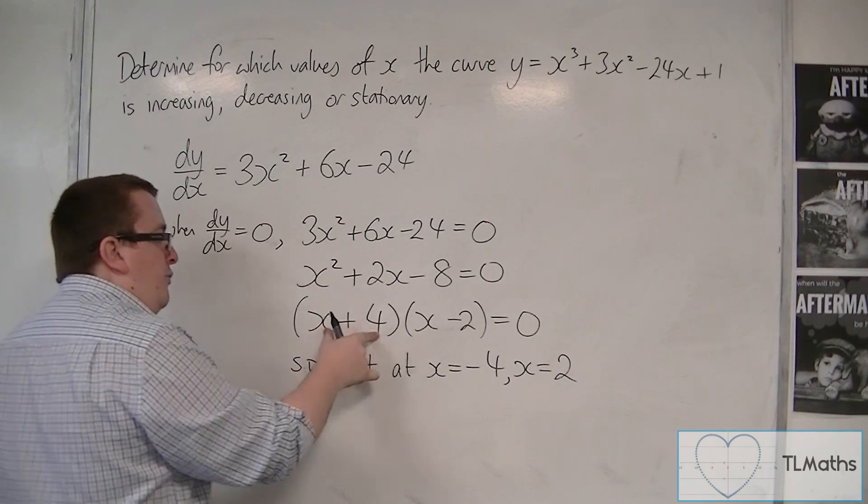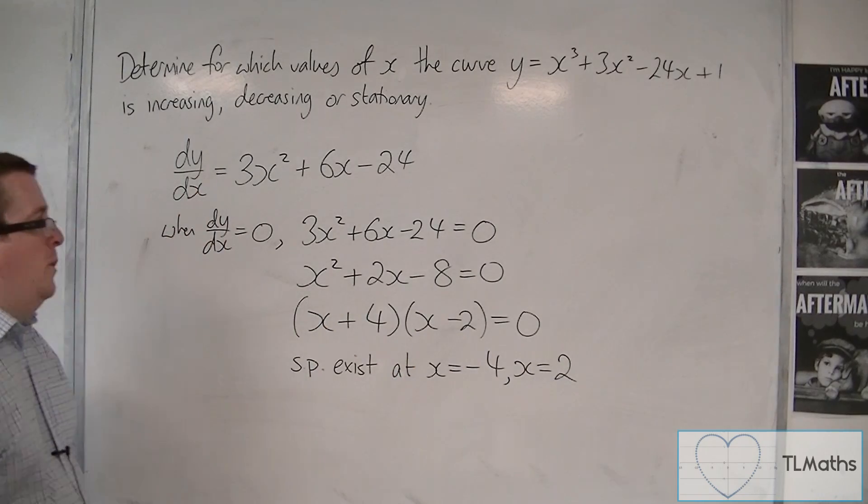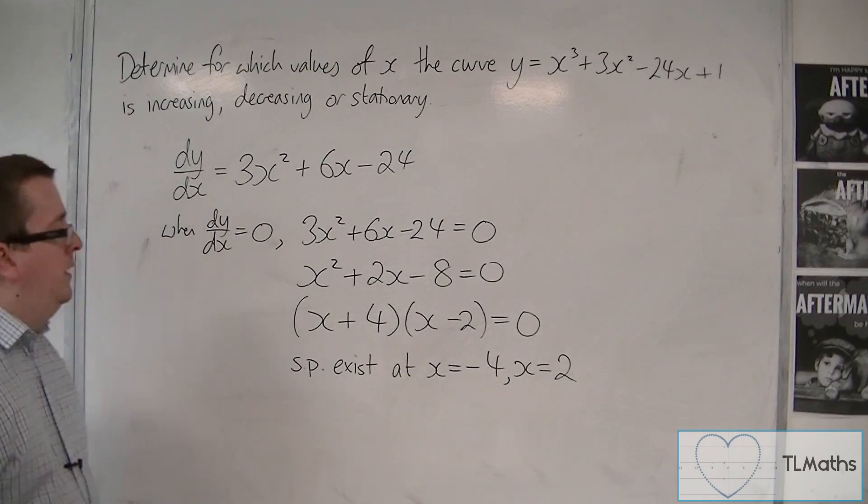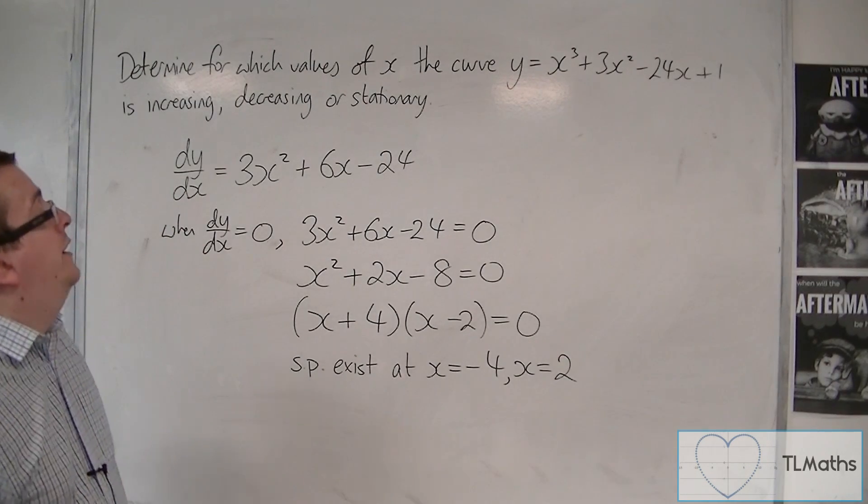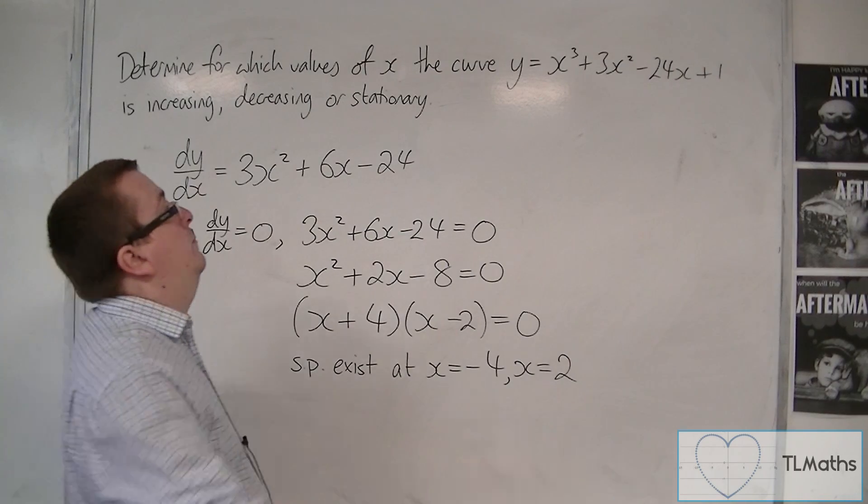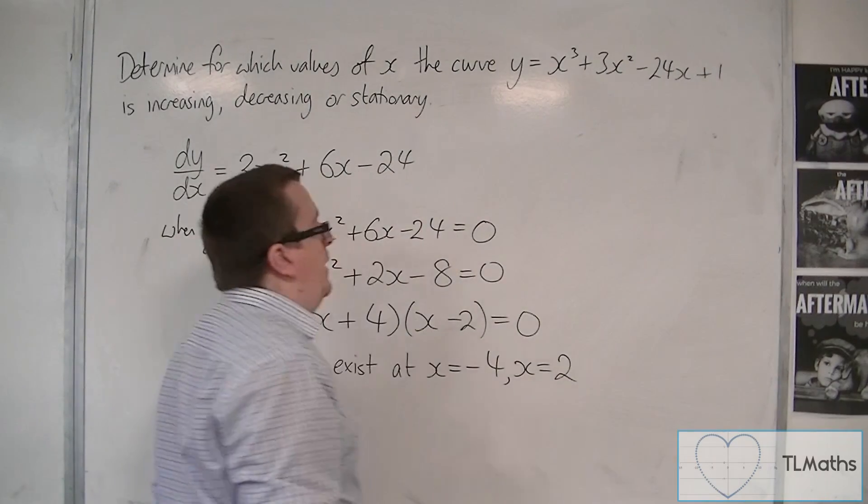Stationary points exist at x equals minus 4 and x equals 2. That's from solving those two brackets. So we now know where the stationary points are. We don't know the y-coordinates, but we could find those out by substituting them into that equation.